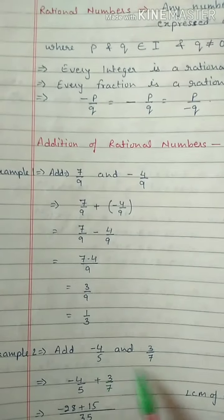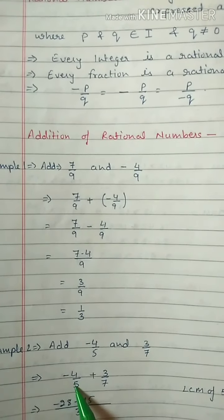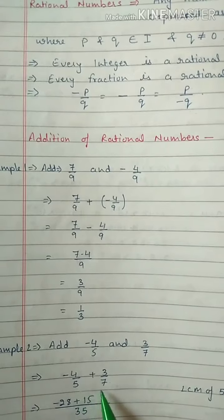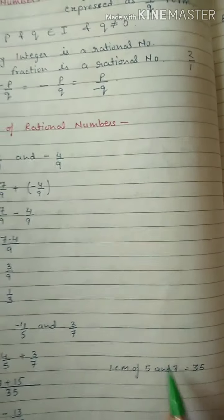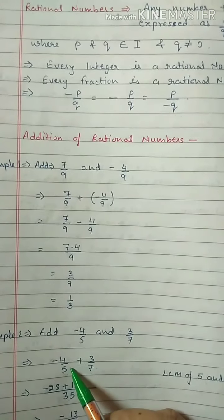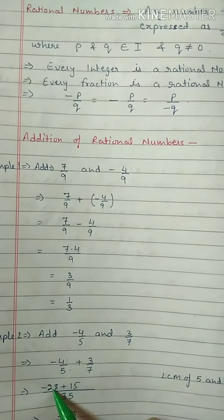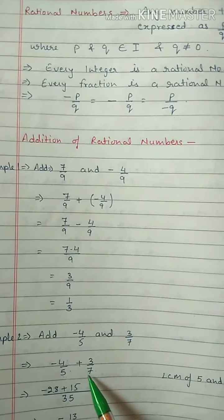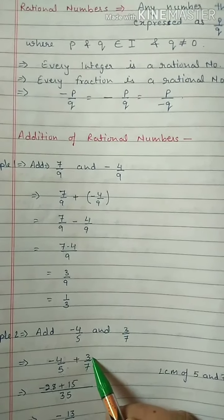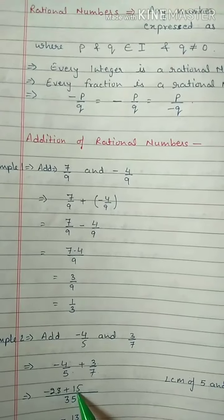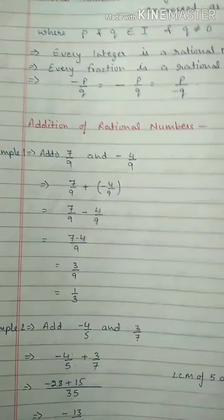Second example when denominator is different: add minus 4 by 5 and 3 by 7. The denominators are different, so take the LCM of 5 and 7, which is 35. In the 5 table, 35 comes 7 times — multiply 7 with the numerator: minus 4 into 7 is minus 28. In the 7 table, 35 comes 5 times — multiply 5 with the numerator: 3 into 5 is 15. Minus 28 plus 15 equals minus 13, so the answer is minus 13 by 35.